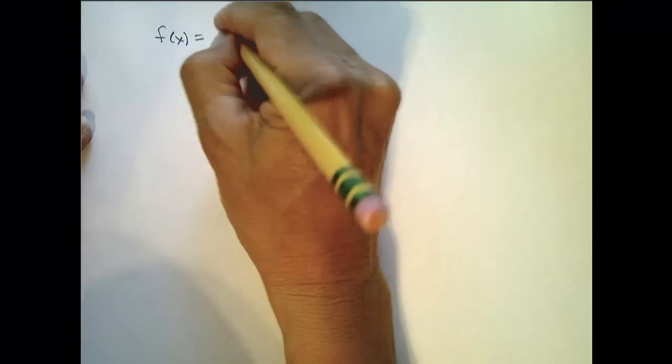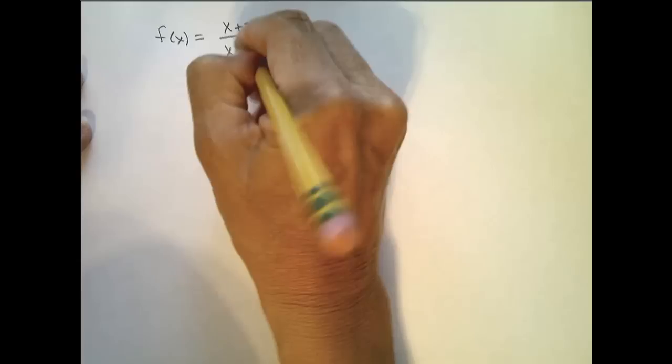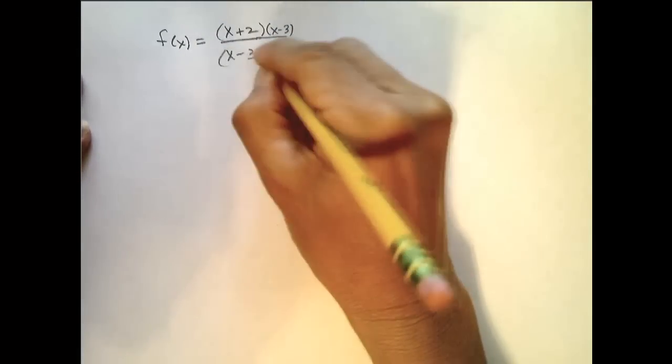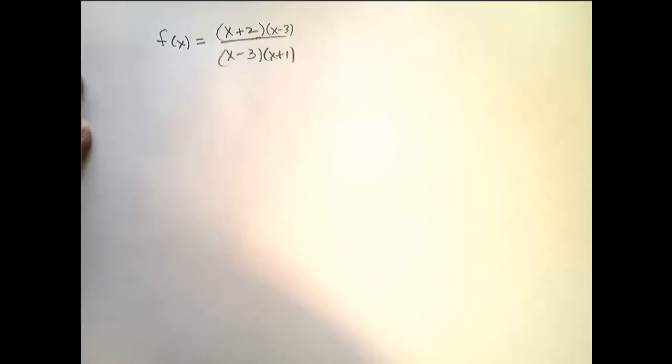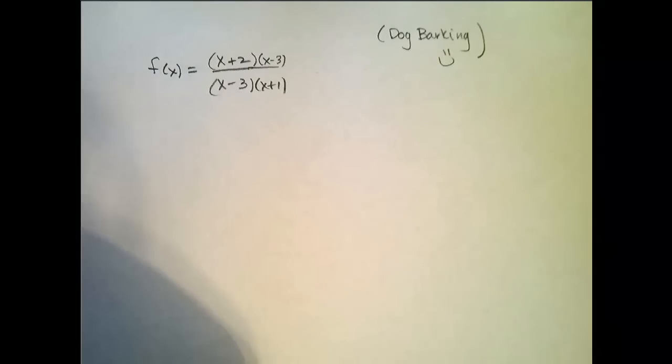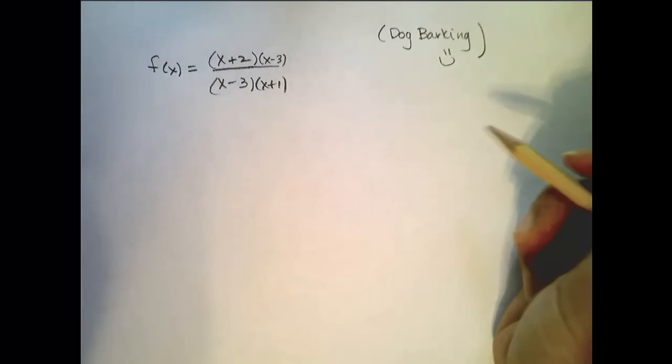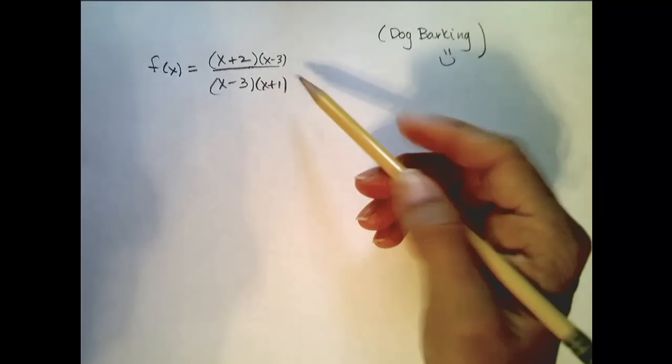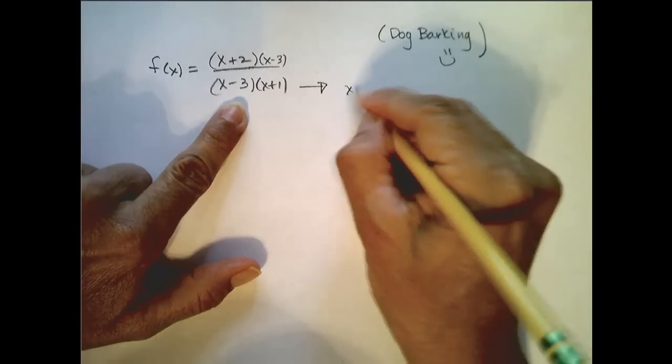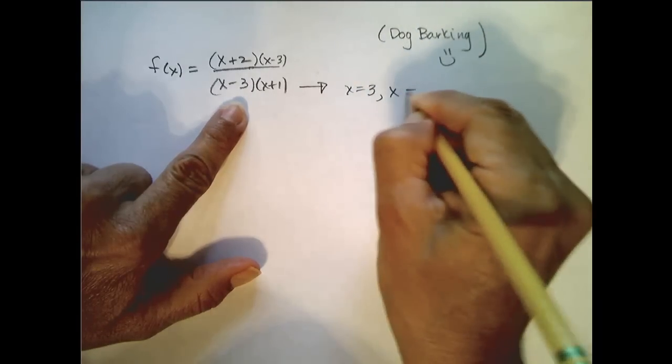Okay, if I have this function f(x) equals (x+2)(x-3) over (x-3)(x+1). And let's make the top actually x minus 3 and the bottom x plus 1. Okay, so this is our function right here. We see already that there are two discontinuities, one at x equals 3 and one at x equals negative 1.